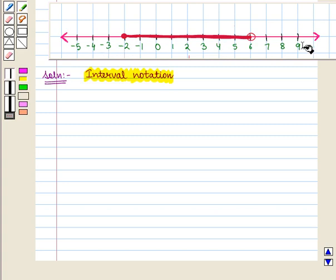On this number line we can see this red shaded portion from minus 2 to 6. It means all the real numbers ranging from minus 2 to 6 are included in the interval.